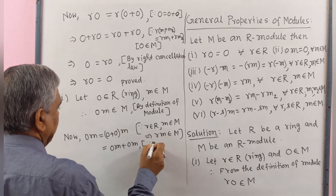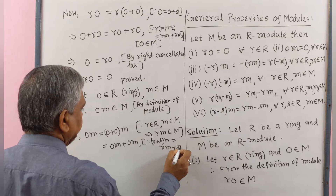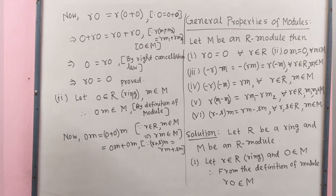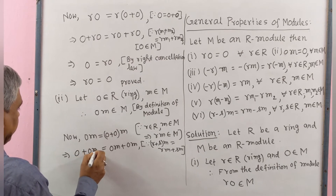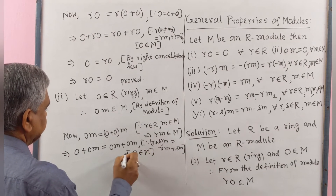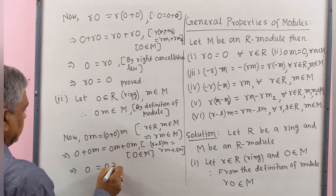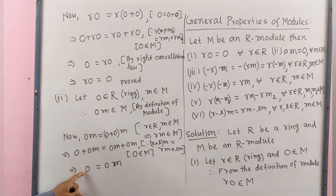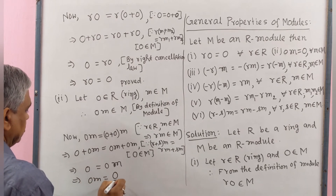Since 0·m belongs to module M, we may write 0 + 0·m = 0·m + 0·m. By right cancellation law, this implies 0 = 0·m. Here the first 0 is the zero of the ring and the resulting 0 is the zero of the module. Therefore 0·m = 0. Proved.